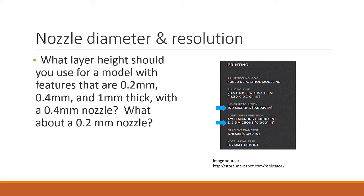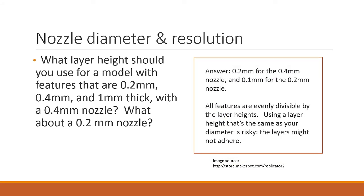You also want to make sure that you pick a layer height that all your thin features are evenly divisible by. If we picked 0.3mm, the platform would either be 0.3mm or 0.6mm thick. So a height of 0.2mm makes sense. For a 0.2mm nozzle, you might think that a height of 0.2mm will be fine, but you want to go smaller. The plastic comes out that thick, and if your printer rises up that much each time, there's a chance layers won't stick together well. 0.1mm makes more sense.